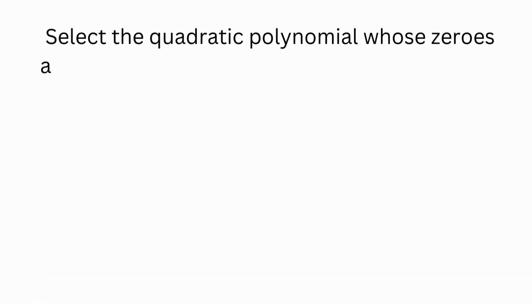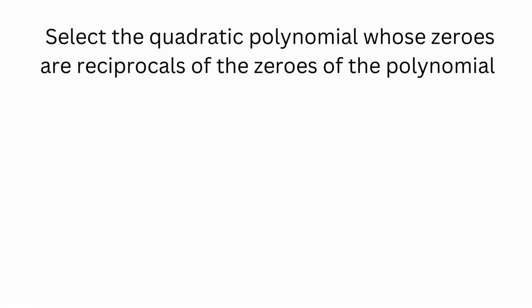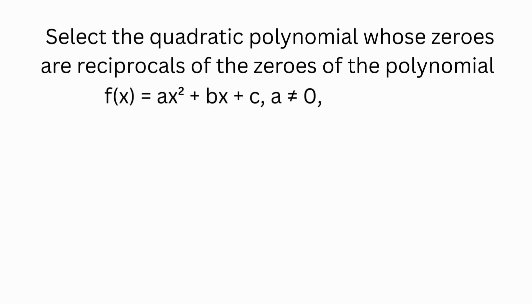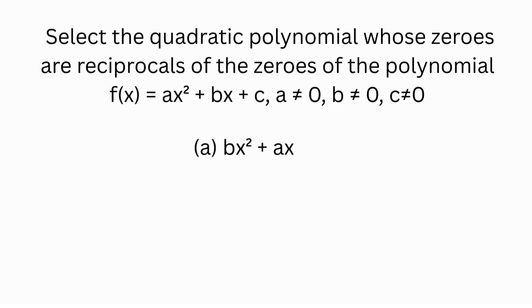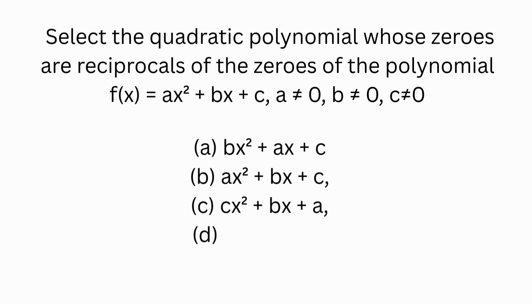Select the quadratic polynomial whose zeros are the reciprocals of the zeros of f(x) = ax² + bx + c, where a, b, and c are not equal to zero. Options: (a) bx² + ax + c, (b) ax² + bx + c, (c) cx² + bx + a, (d) bx² + cx + a.